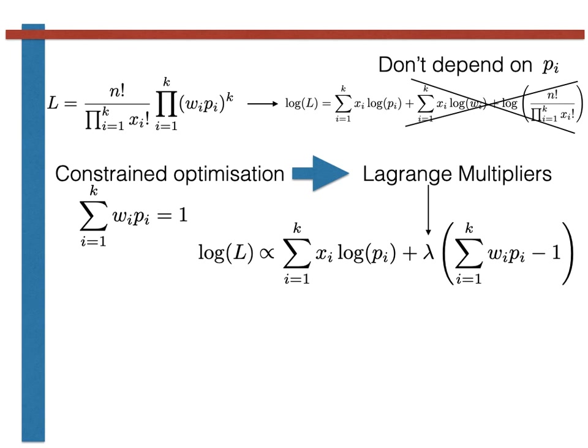Taking the partial derivative of our extended function with respect to pj gives the following result. Furthermore, because we are searching for a maximum in the function, we can set this derivative equal to 0.